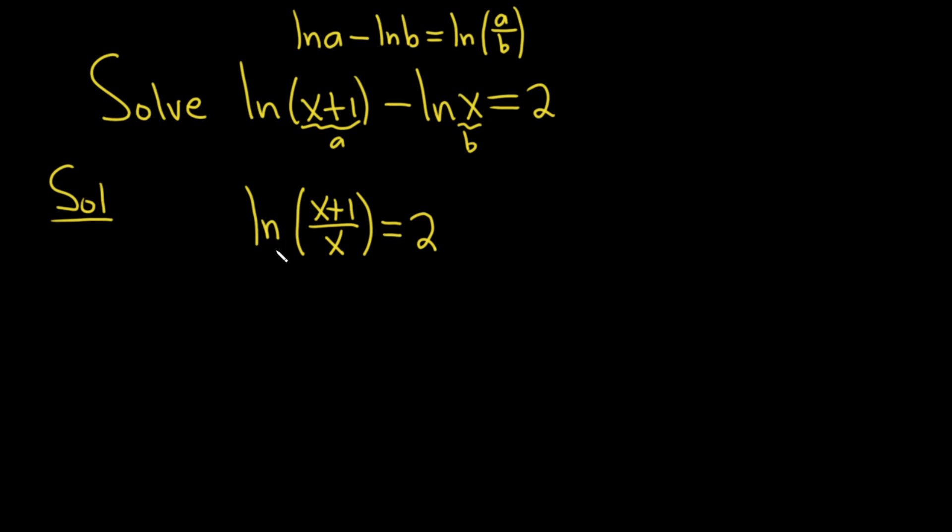So now we need to get rid of the log. There's a formula that says if you have e to the ln x, you get x. So here we have an ln, so we're just missing the e. So what we'll do is put it there and put it here. We'll exponentiate both sides.